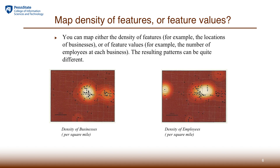Another decision about mapping density is whether to measure density for the features themselves or for things that are inside them. For example, a business establishment has employees — a large business has more, a small business has less. If we map the density of businesses, we get something like the map on the left. However, if we consider the number of employees within each business and map the density of employees, we get a very different answer. The map on the right shows the density of employees, although the point locations represent businesses.